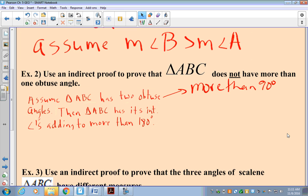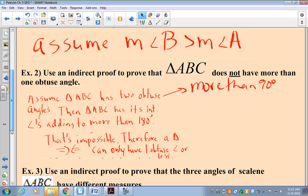Now we're going to follow logic through to our contradiction. Then triangle ABC has its interior angles adding to more than 180. Interior angles adding to more than 180 violates the triangle sum theorem, and it's impossible. There is your contradiction. Therefore, you can only have one obtuse angle or less than that.